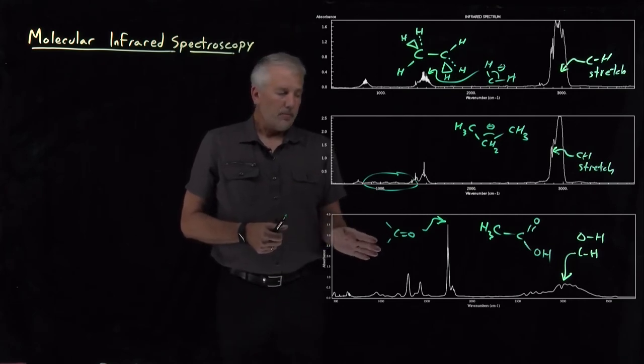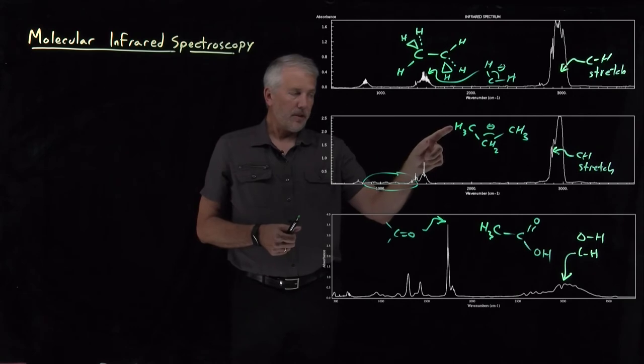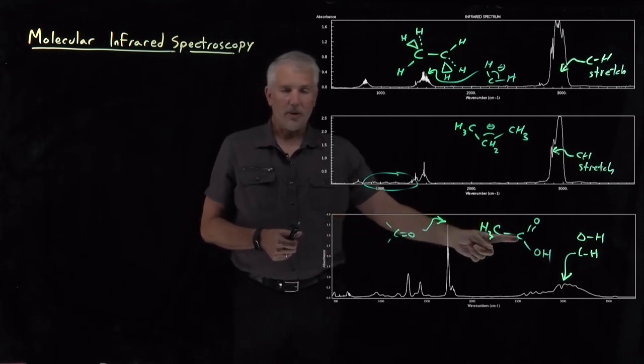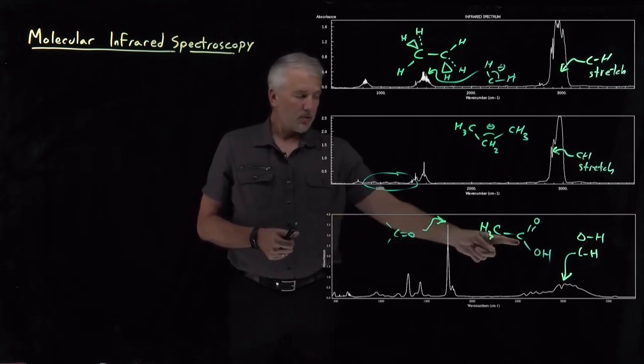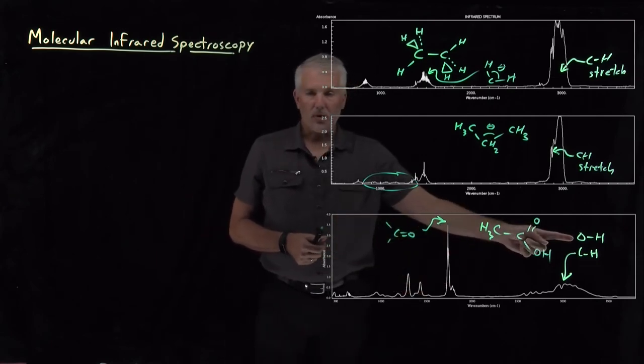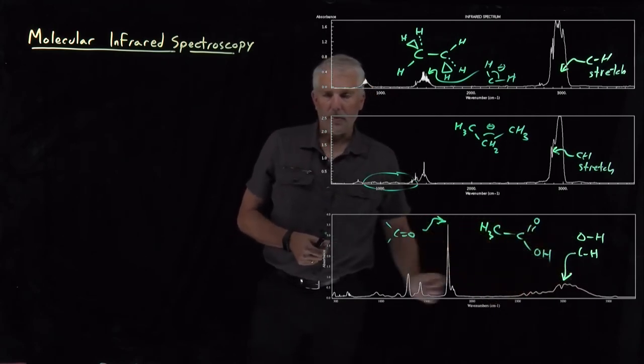The main point, however, is the spectrum ends up looking different for different molecules, not because of the number of atoms of a particular type they are, but as a diagnostic of what types of functional groups there are. Molecules with carbonyl groups will tend to have an absorption peak here around 1,700 wave numbers. Molecules with alcohol groups will have an OH stretch, and they'll have this broad absorption band around 3,000 wave numbers.